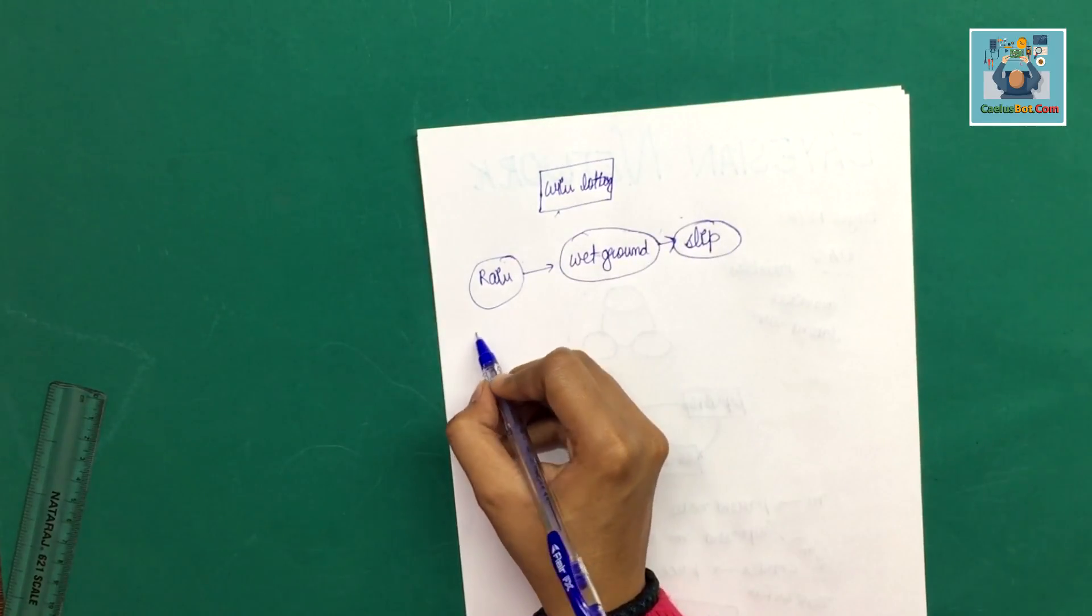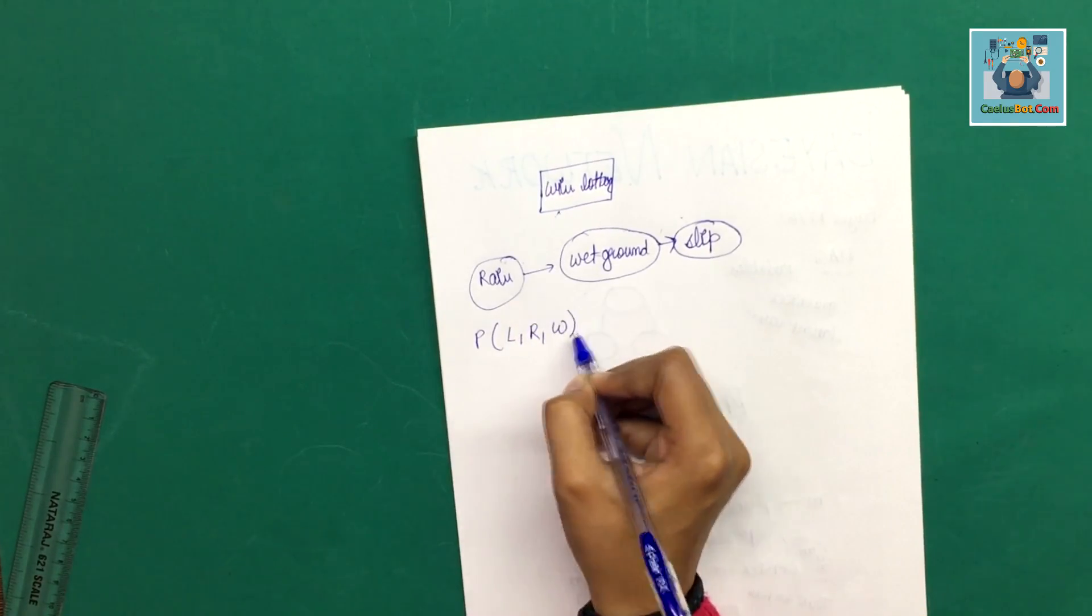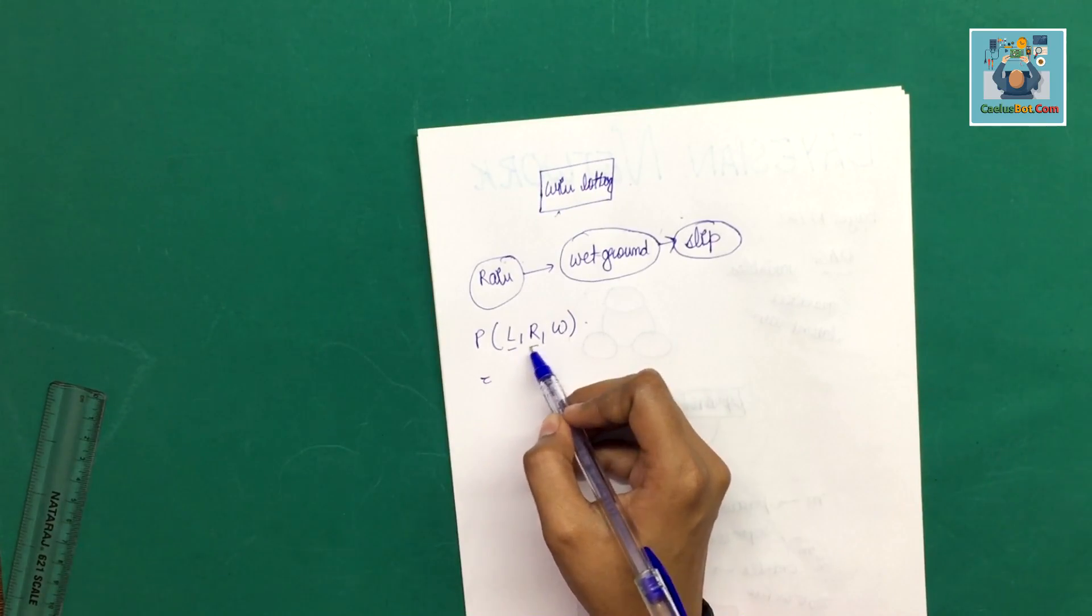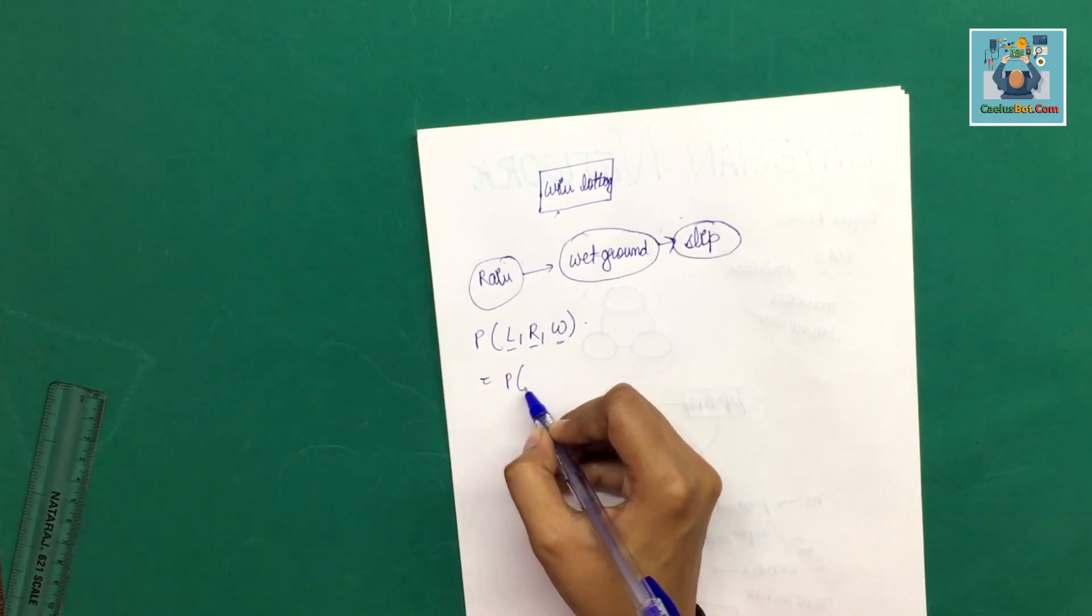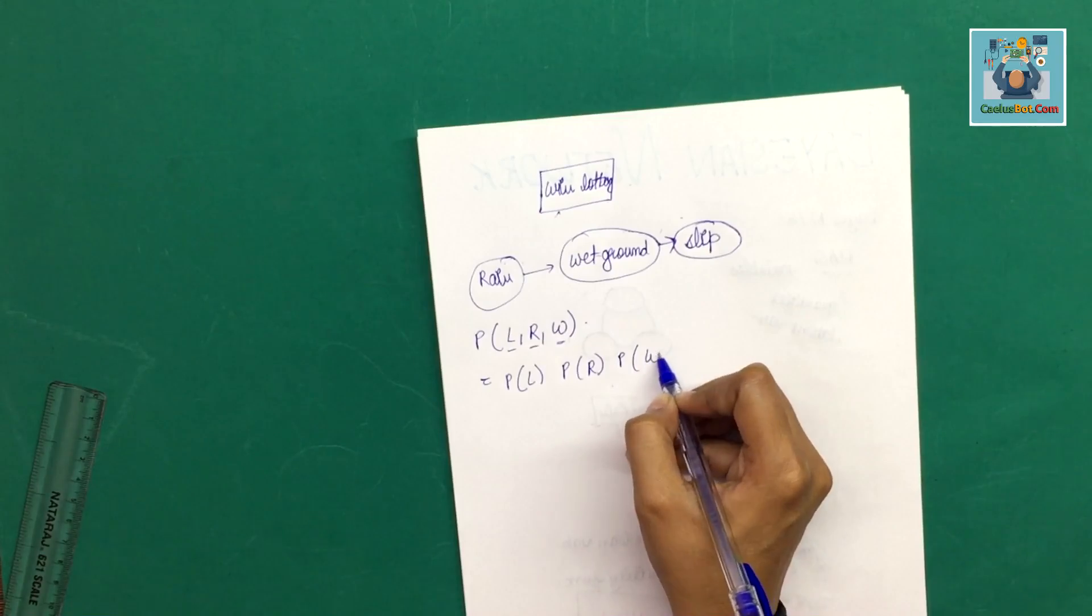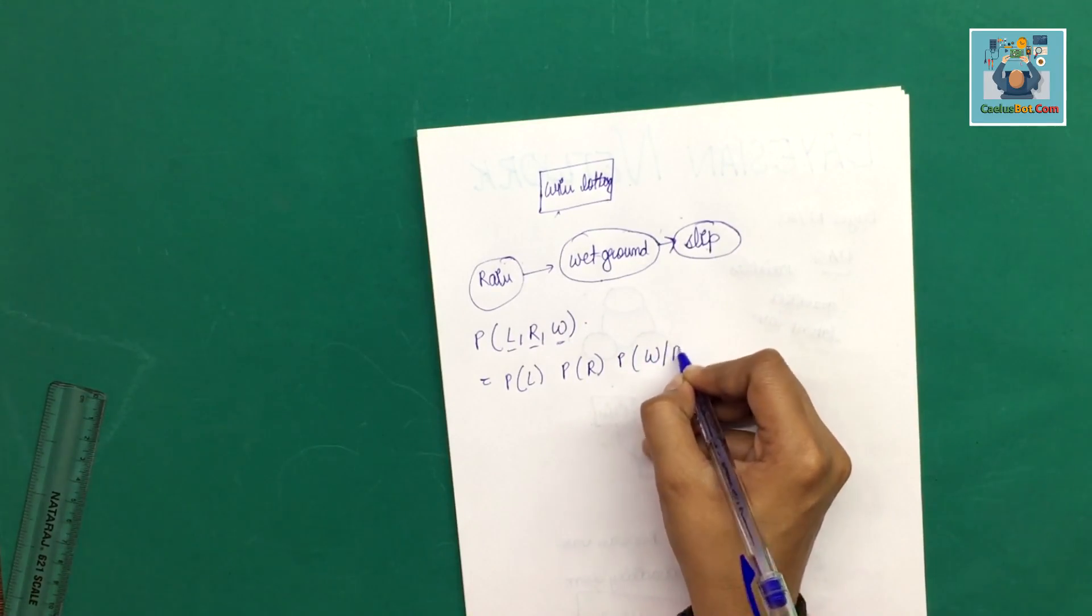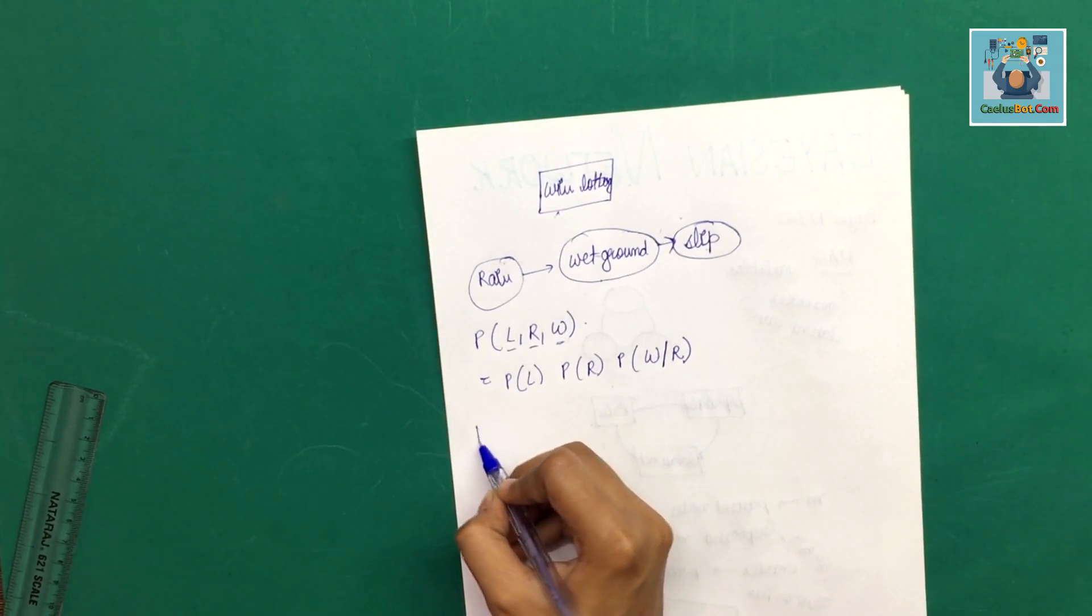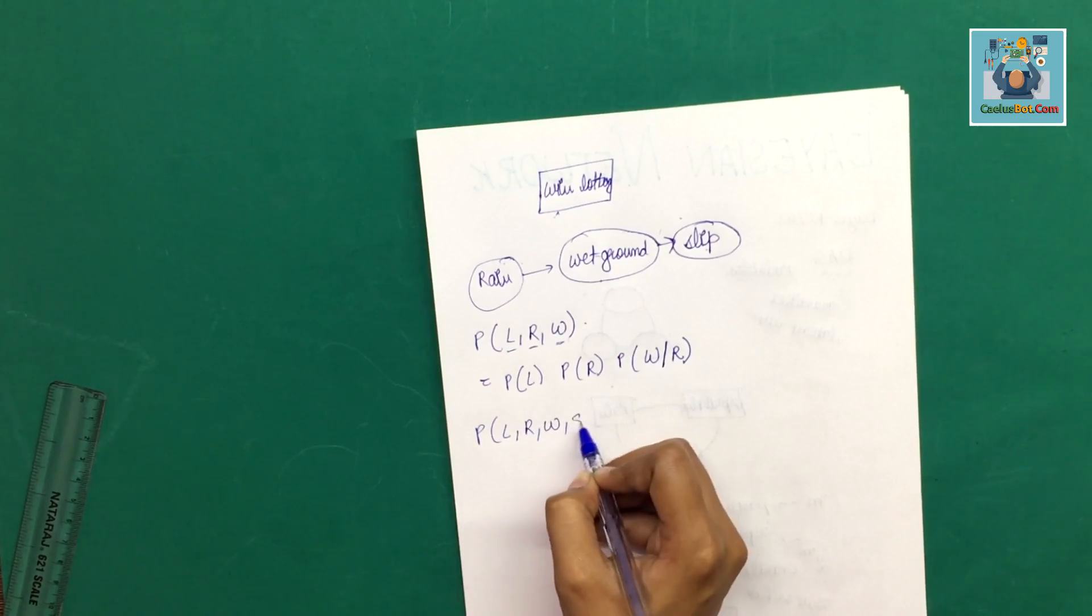If we take another probability of L, R, W: L for lottery, R for rain, W for wet ground. Now if we take another probability, we can divide it from rain. If we take another one R, W, and S.